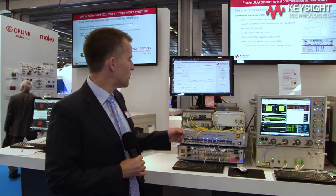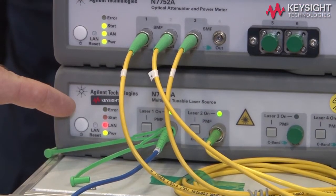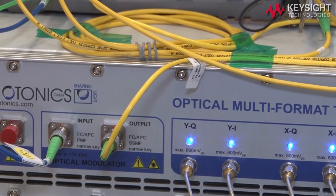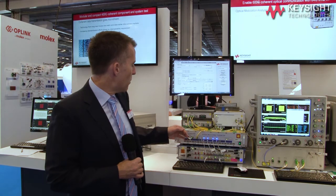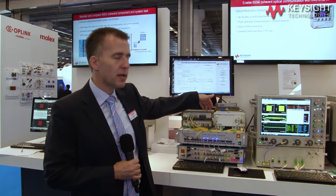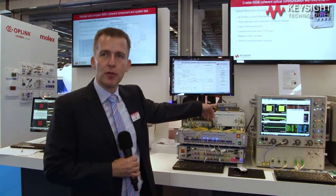On the transmitter side we have a CW laser source that provides the carrier to an optical modulator, the optical multi-format transmitter from ID Photonics. It contains a set of drive amplifiers, a modulator, and a format-independent bias controller.